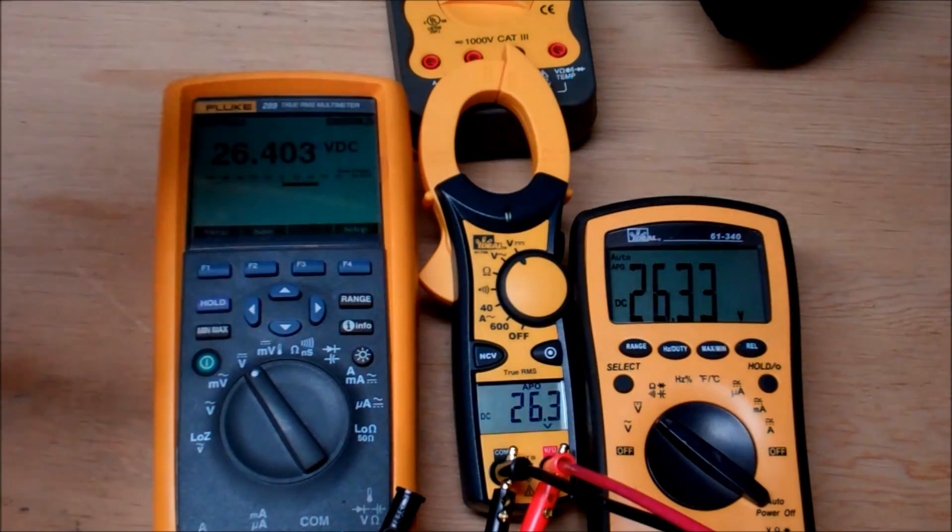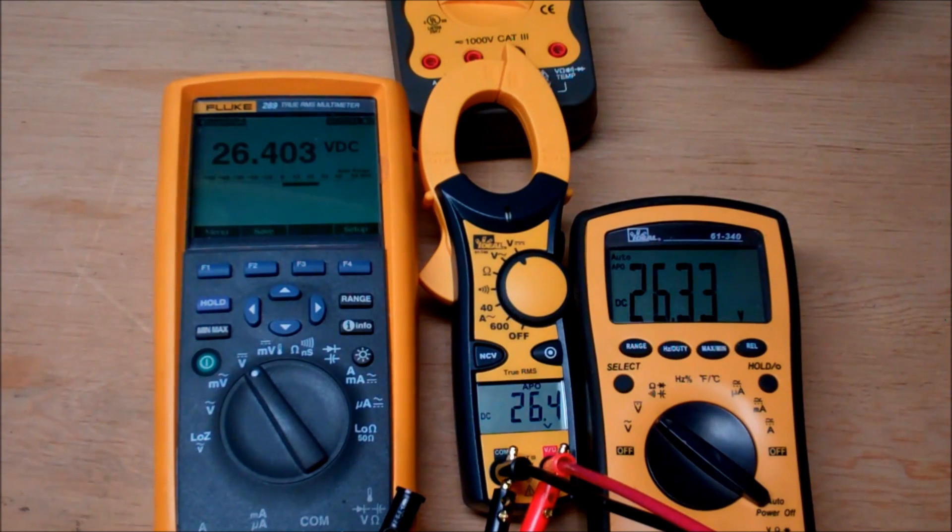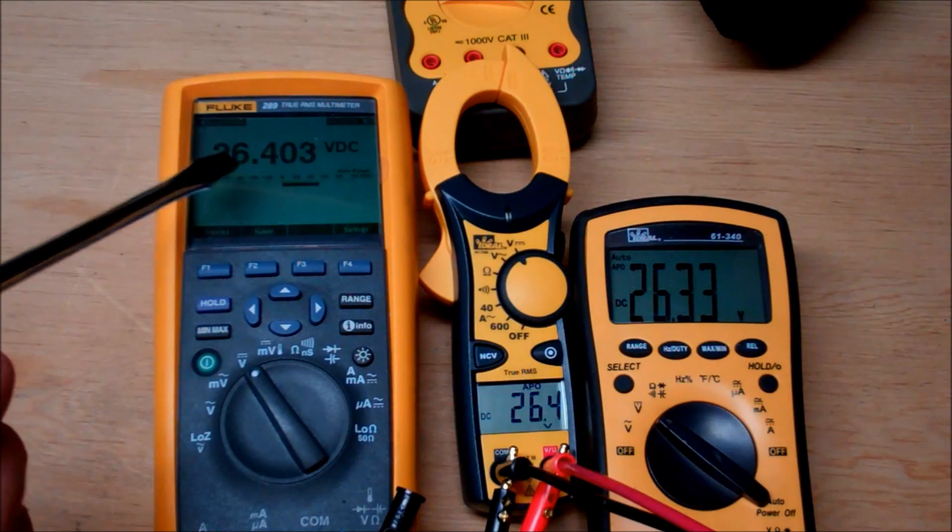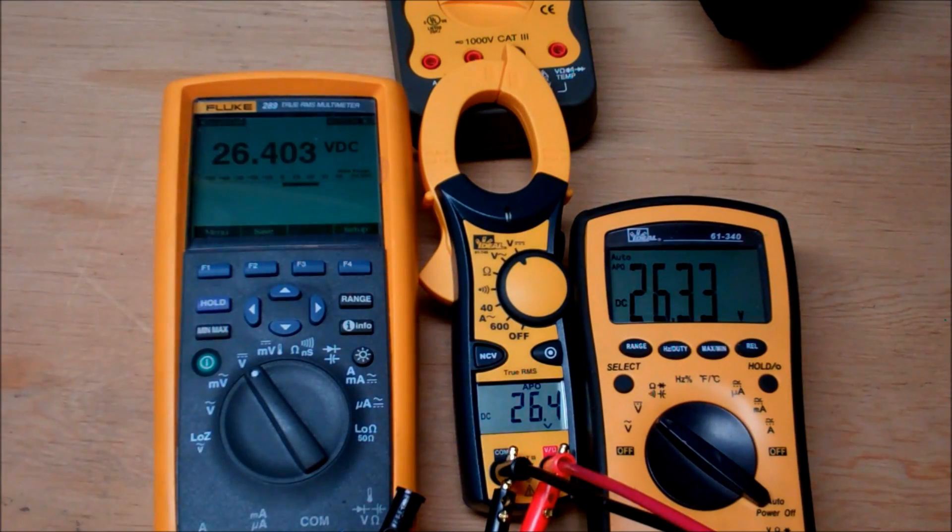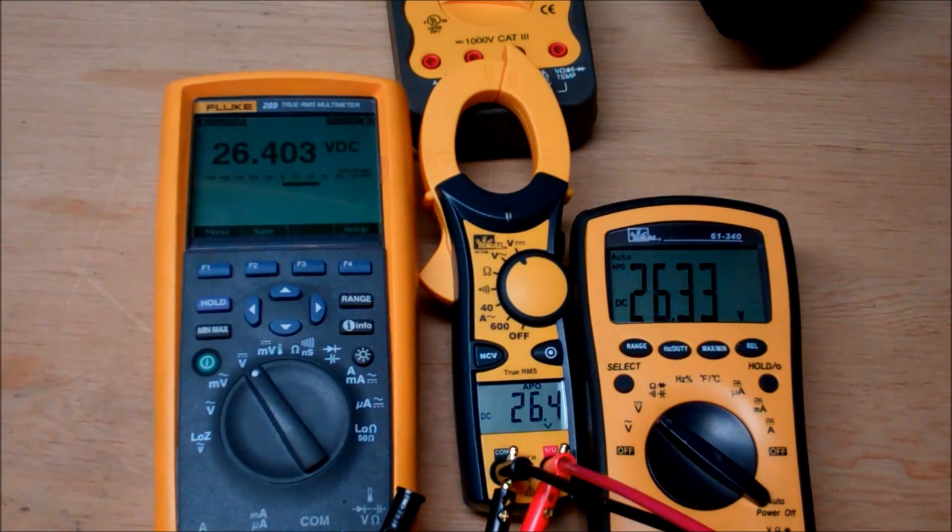Now my Fluke 289, which is going to be our standard reference for this video, is calibrated. As you can see, it's displaying 26.403 and our 61746 is really holding up. It's a very proportional reading to this and it's maintaining that.